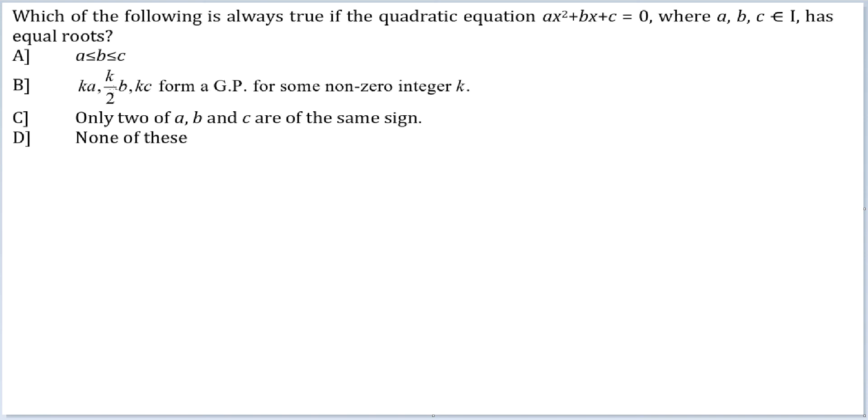Which of the following is always true? The first option: a is less than equal to b is less than equal to c. This is of course incorrect. If I had an equation of this form x² = 0, the two roots are 0. Here a is equal to 1, b is equal to 0. A is not less than equal to b, therefore this is incorrect.